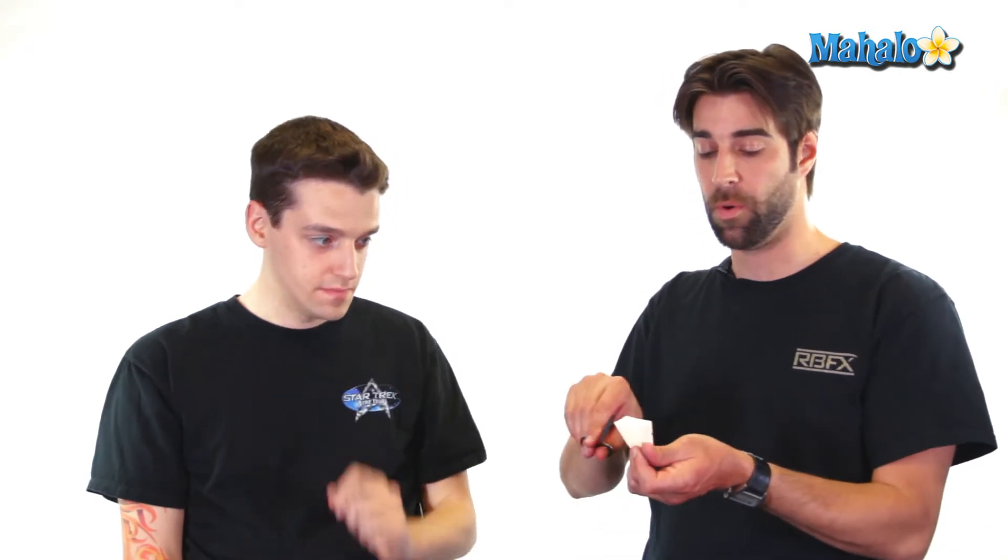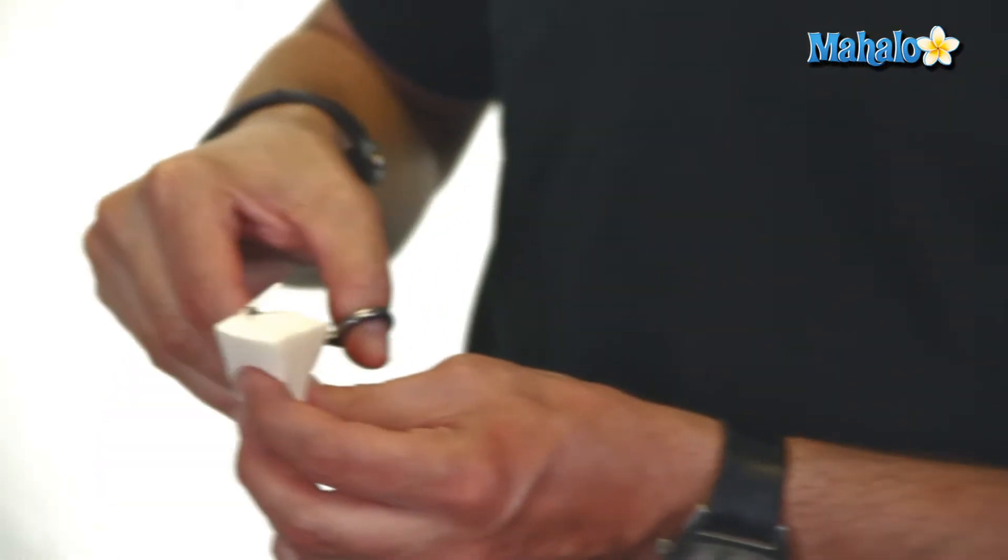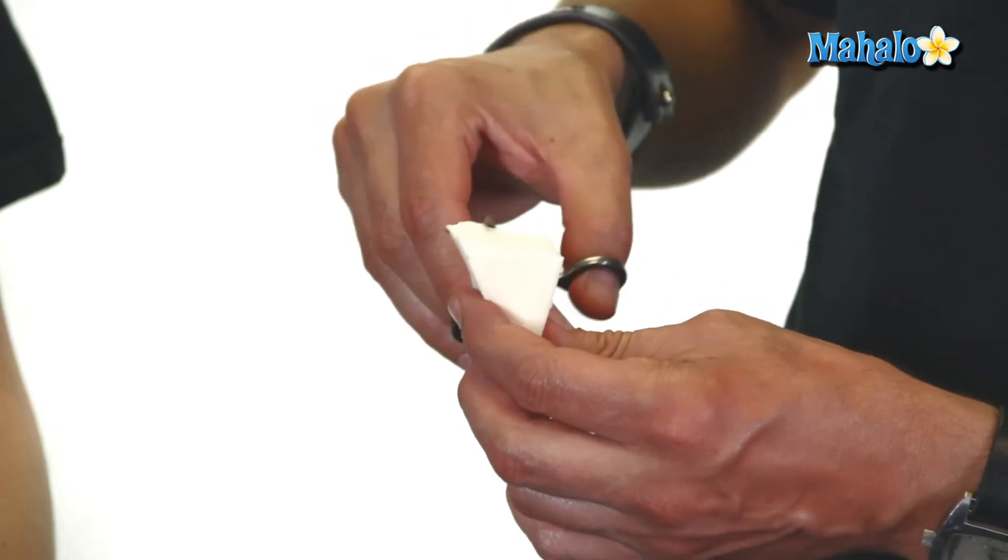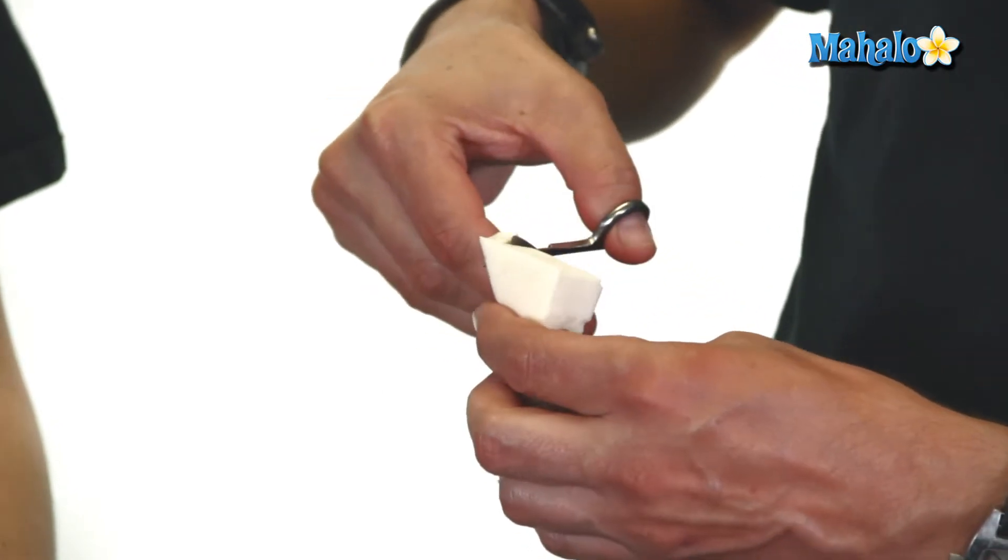First off, what you want to do is take the scissors and soften the square edges of the sponge itself. There's no straight lines in nature, so you want to recreate that by shaving the outside of the stipple sponge with the scissors.